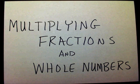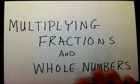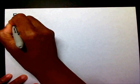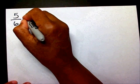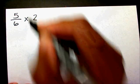Today we're going to multiply fractions and whole numbers, so let's get started. So let's say that I have 5 sixths times 2.